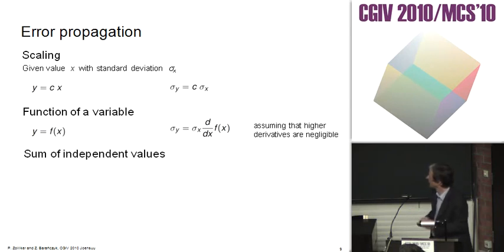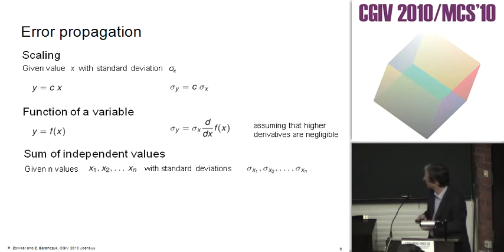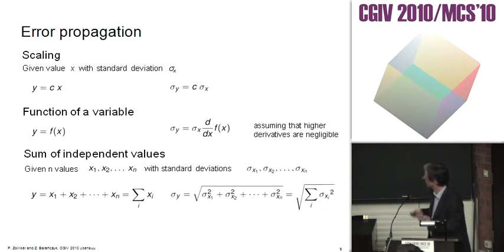If you have sums of independent values, a series of X_1 to X_N with standard deviations sigma_X to sigma_XN, then the error goes with the square of the sigmas, and the sum of the squares of the sigmas is the square root.